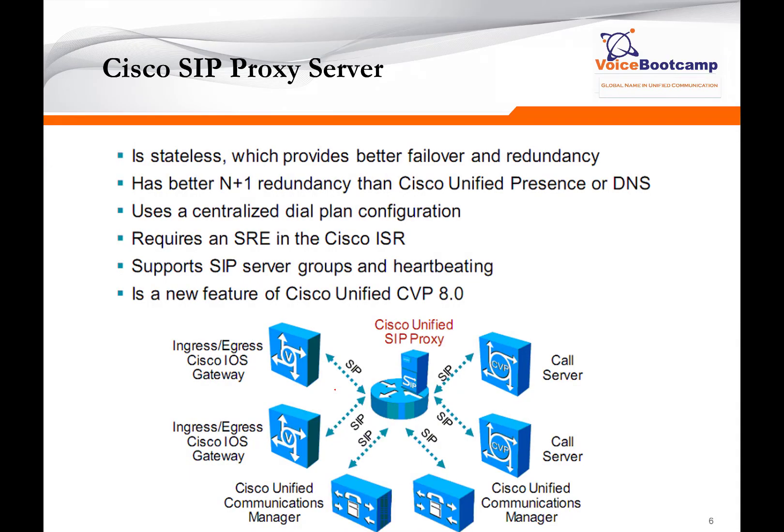The Cisco SIP proxy server is currently a virtual machine which you install on VMware, and is also available in an IOS-based router using an SRE module. The SIP proxy server can provide much more resilient connectivity, with good failover and redundancy as well. Using a SIP proxy, you can provide load balancing between multiple call servers or multiple call managers. You don't have to have a presence SIP proxy, but it is something you may face in larger scale deployments.